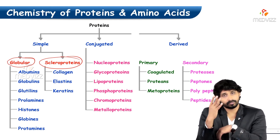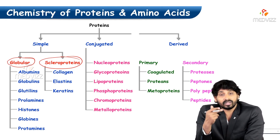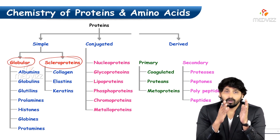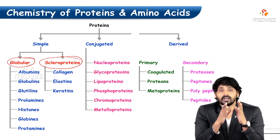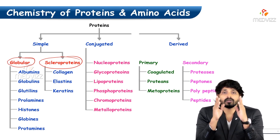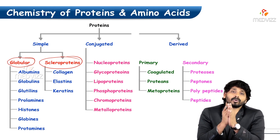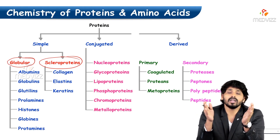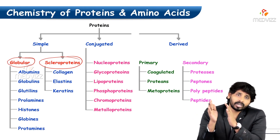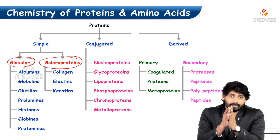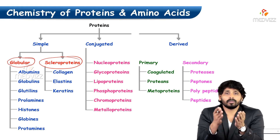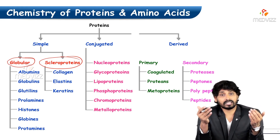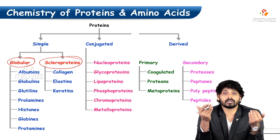Conjugated proteins include nuclear proteins, glycoproteins, and others. Simple proteins are all protein in nature, but conjugated proteins have a protein part and a non-protein part — that non-protein part makes them conjugated. Examples: nuclear proteins, glycoproteins, lipoproteins, phosphoproteins, chromoproteins, and metalloproteins.